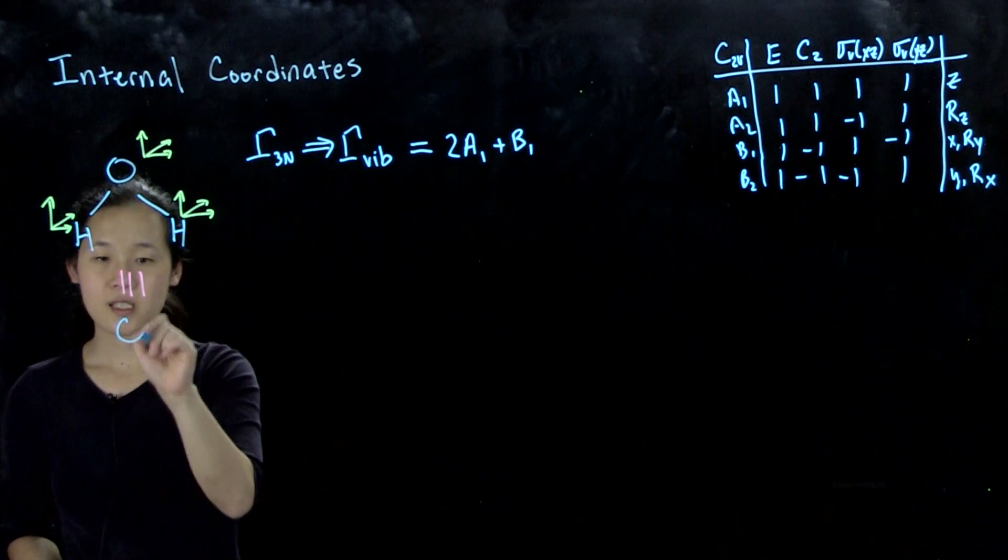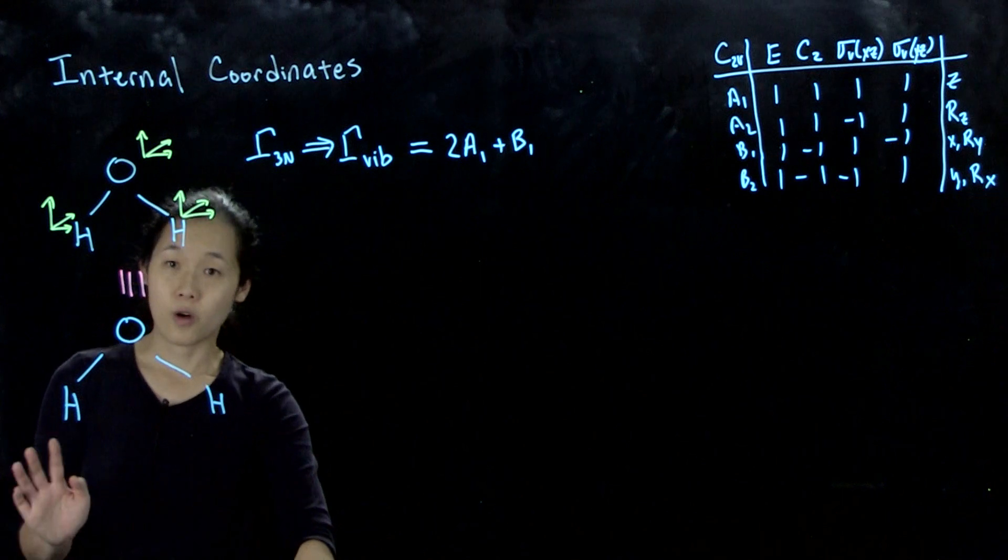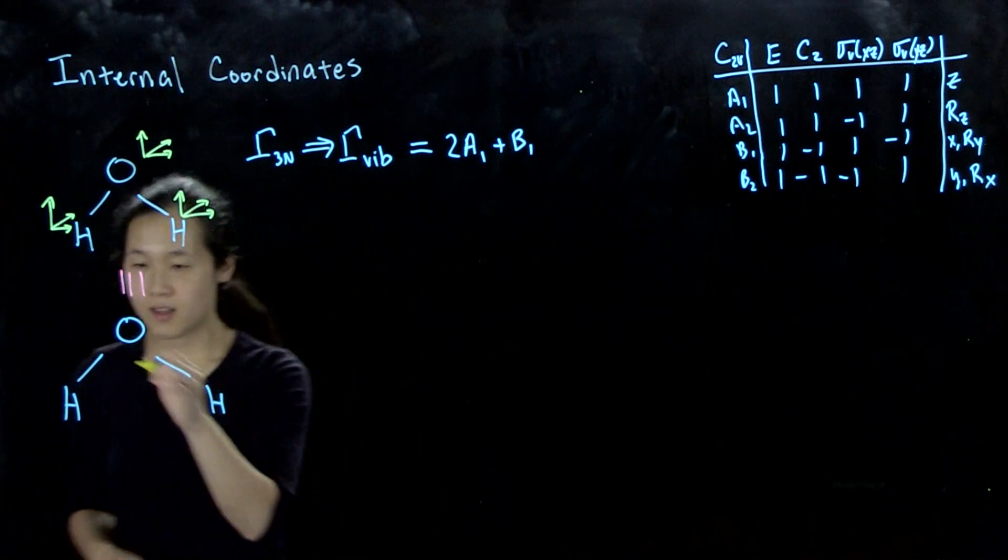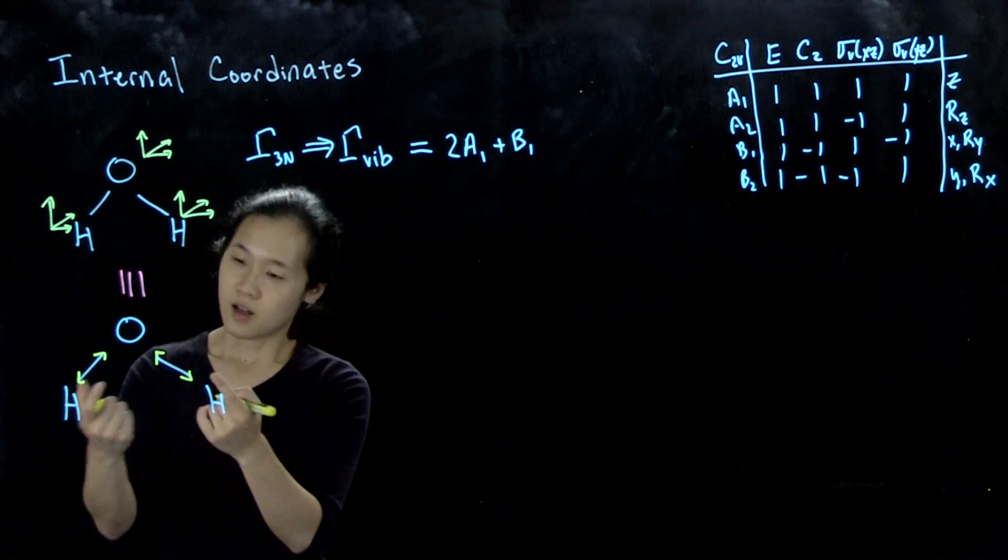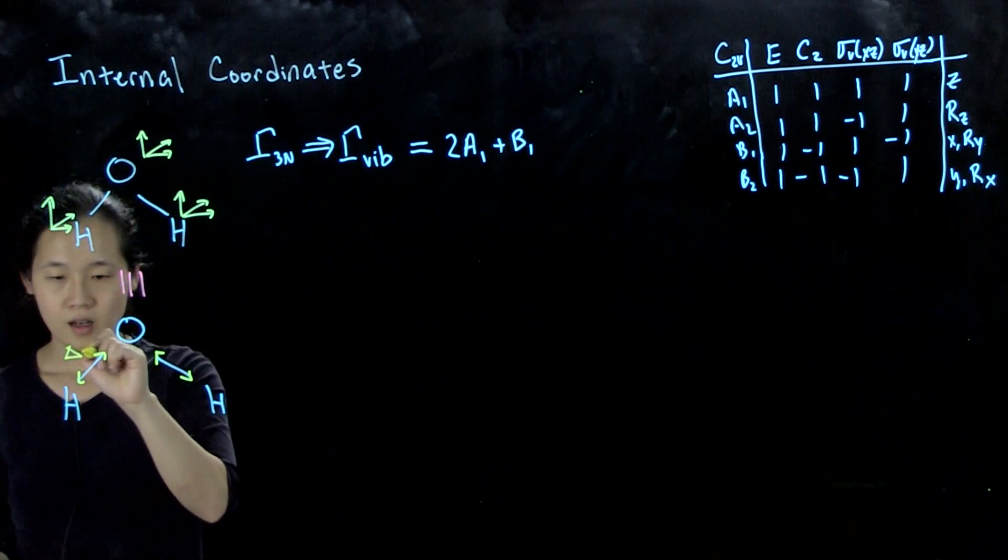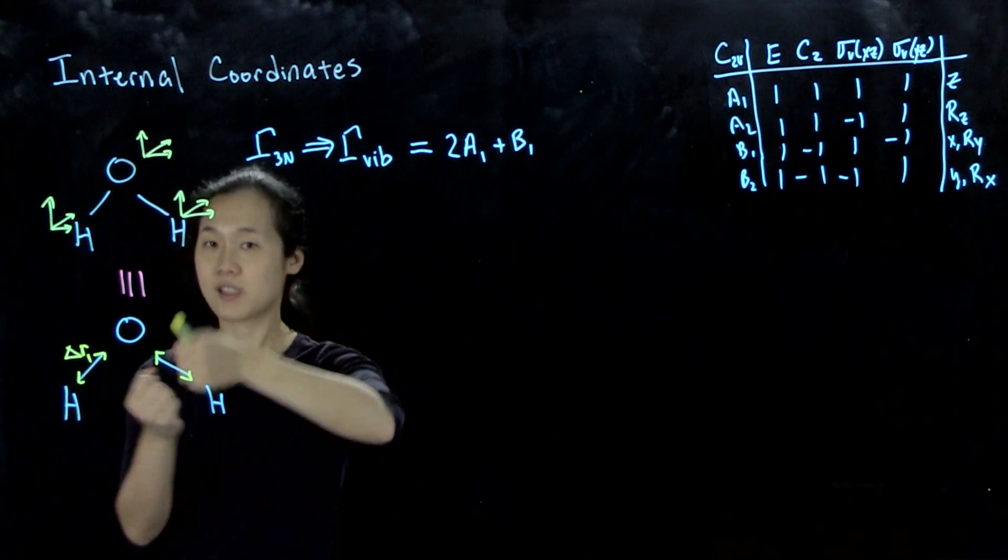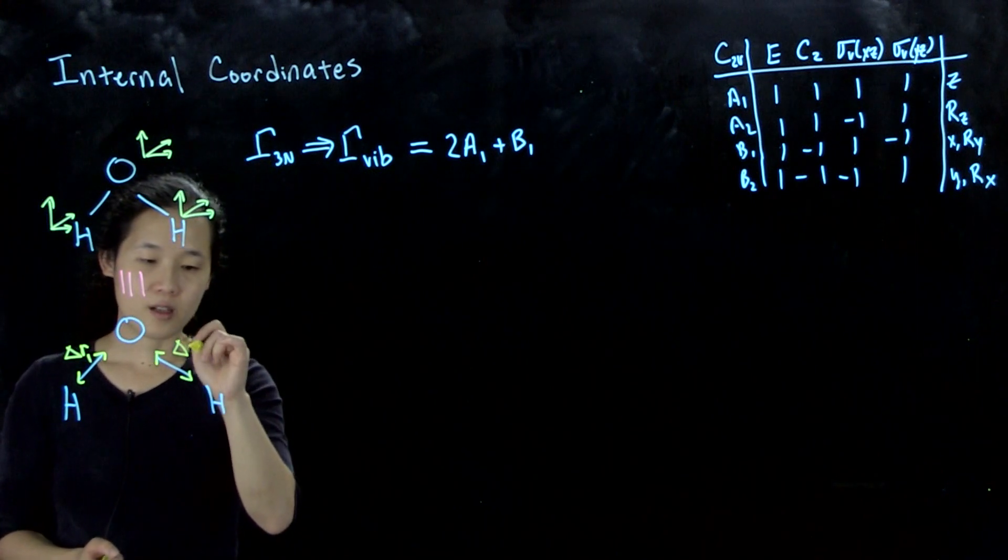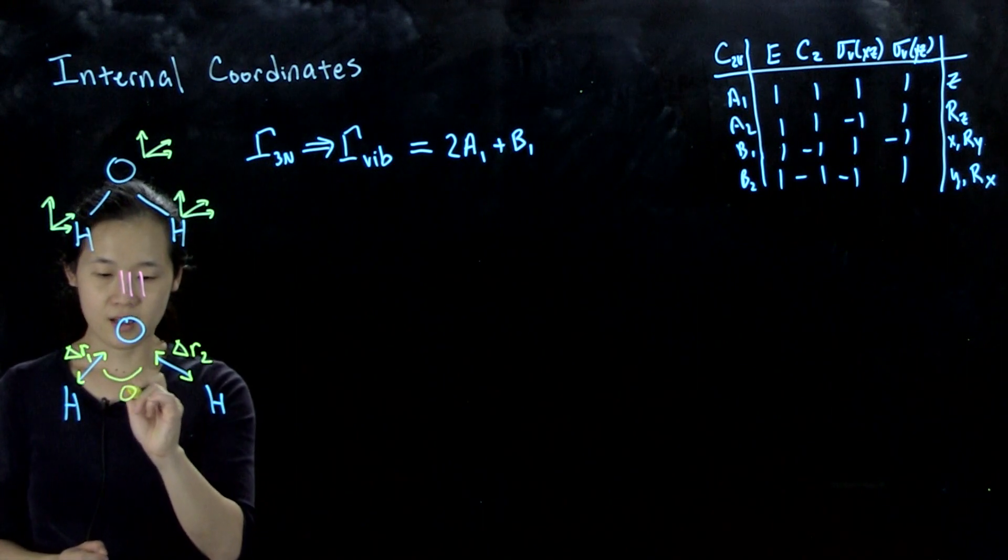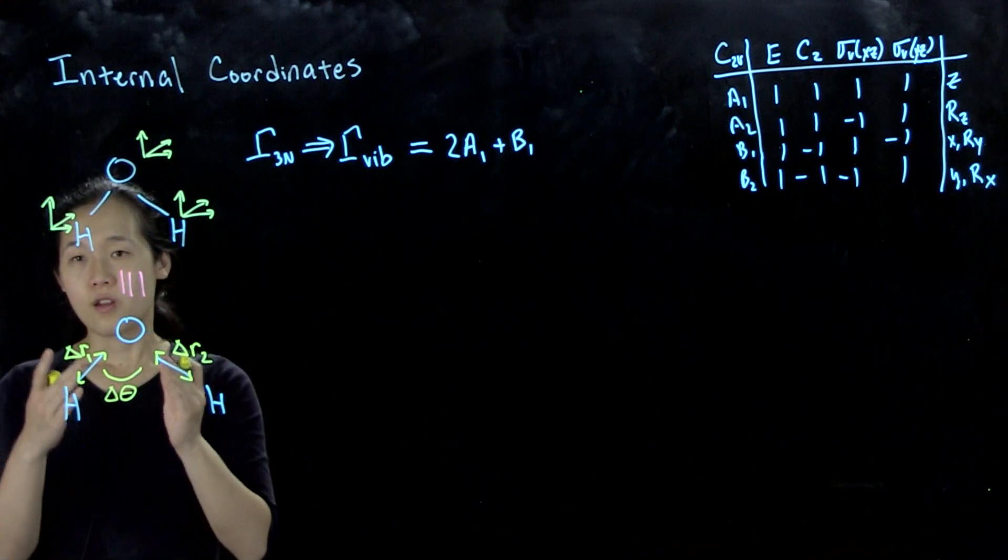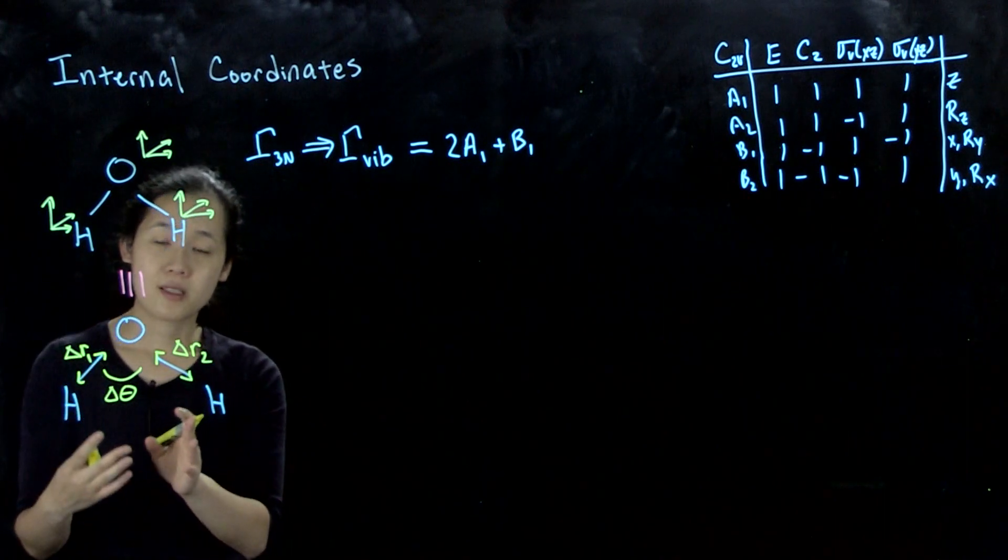Instead of having the XYZ, once we know the irreducible representation that we have, or even before, we could express it as the so-called internal coordinates. We have bond stretching - we call this delta R1, so R would be along a bond, and the delta means it's getting bigger or smaller, stretching or compressing. We have another bond, delta R2. In addition to bond stretching, we could also have an internal coordinate of theta, so delta theta for bending. So these are our internal coordinates, and we could use these to express molecular motion.